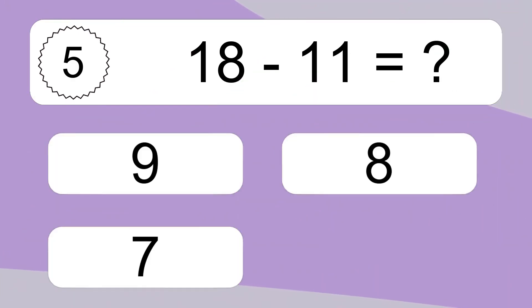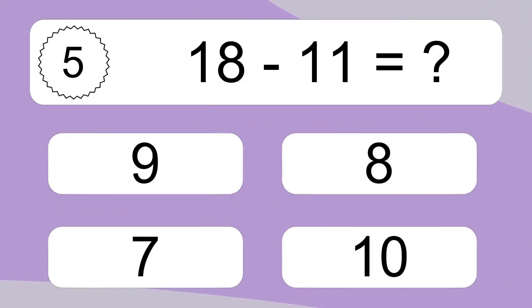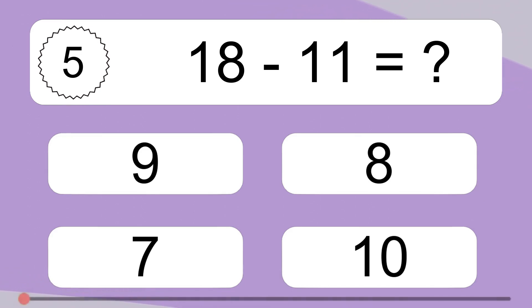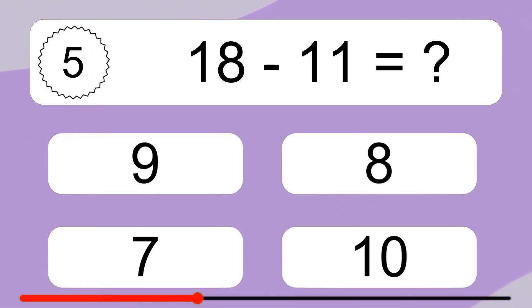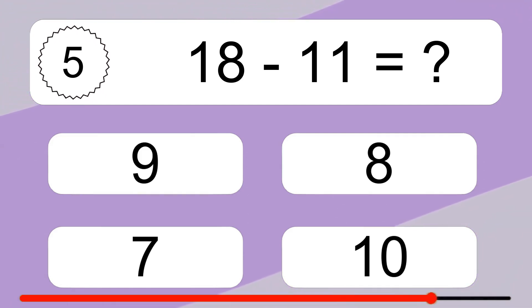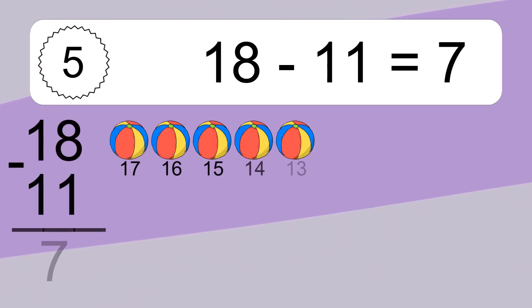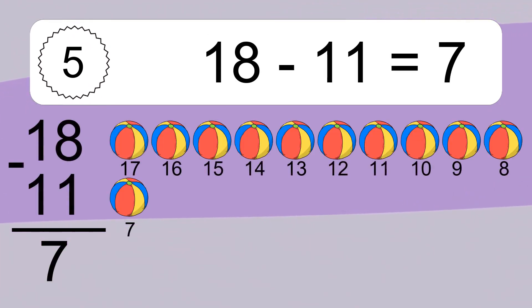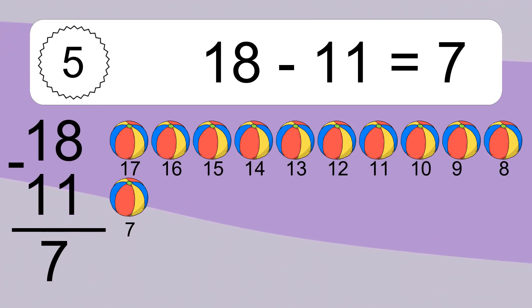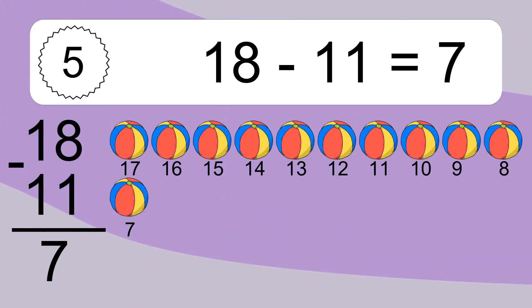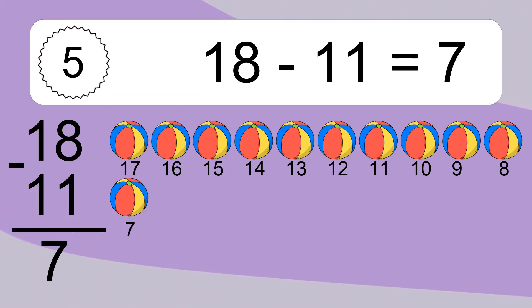18 minus 11 equals what? 18 minus 11 equals 7. Let's count it: 17, 16, 15, 14, 13, 12, 11, 10, 9, 8, 7.